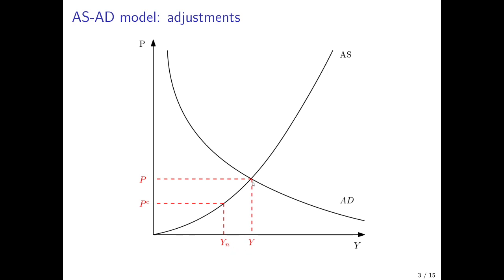If actual unemployment is lower and therefore output is higher than the natural rate of unemployment and natural output, then the economy is overheating. It produces more, the unemployment rate is below the rate that leads to a stable inflation rate, and therefore we would have an increase in the actual price level over time. This would manifest itself in a leftward shift of the AS curve.